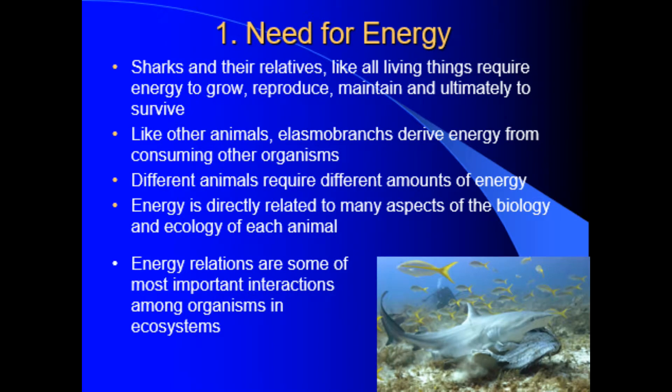Sharks, skates and rays are no different than any other living thing. One of the characteristics of living things is that they have energy requirements — every living thing needs energy. They need energy and they use a lot of energy for metabolism. Metabolism is basically supplying the needs of the body to be able to swim, run, or fly — whatever the animal is doing. Essentially, you're making ATP to do work in cells and muscles.